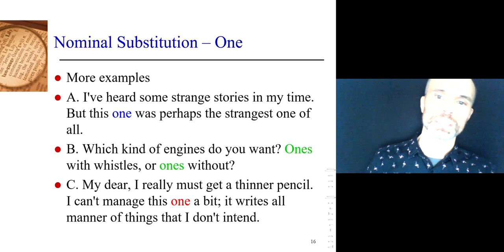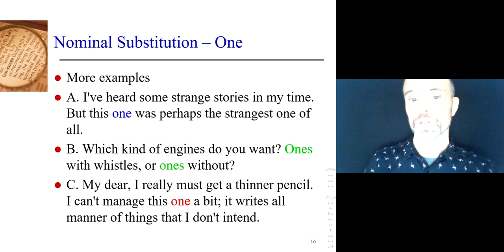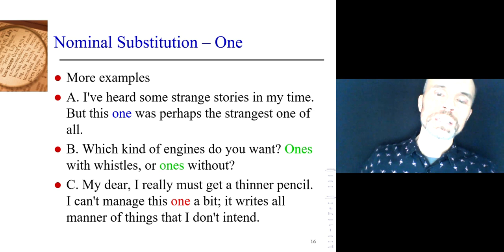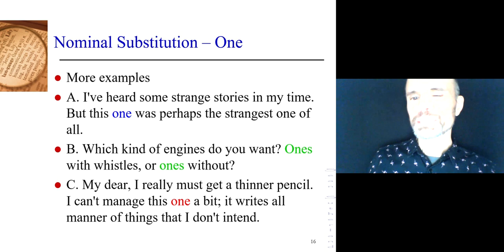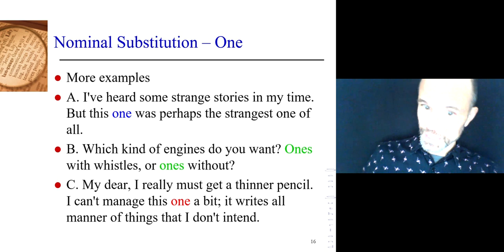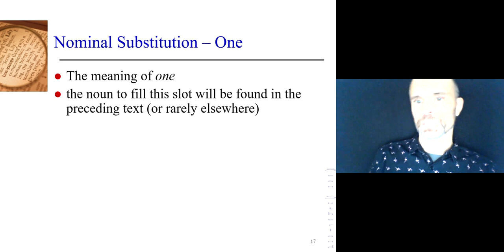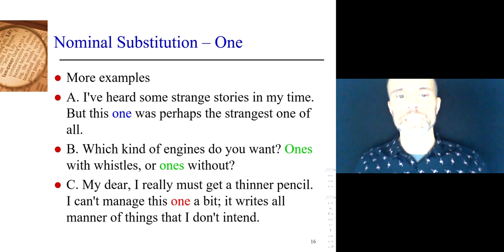Here are some more examples of nominal substitution. This is the kind of place where you might want to pause and try it yourself. Look at the word 'one' or 'ones'. You've got a green, a blue, a green, and a red example. What word is it substituting for in each case? And what's been changed — what class are you talking about, and what subclass has changed from the first time it's mentioned to the second?